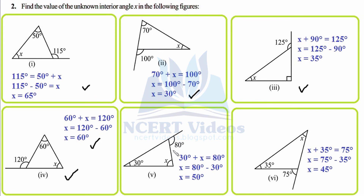For the fifth figure, the exterior angle 80° equals 30° plus X. Transposing 30, X equals 80 minus 30, which is 50°. For the sixth figure, X plus 35° equals 75°, so X equals 75 minus 35, which is 45°. This angle measures 45 degrees. That was the sixth and last part of question number two.